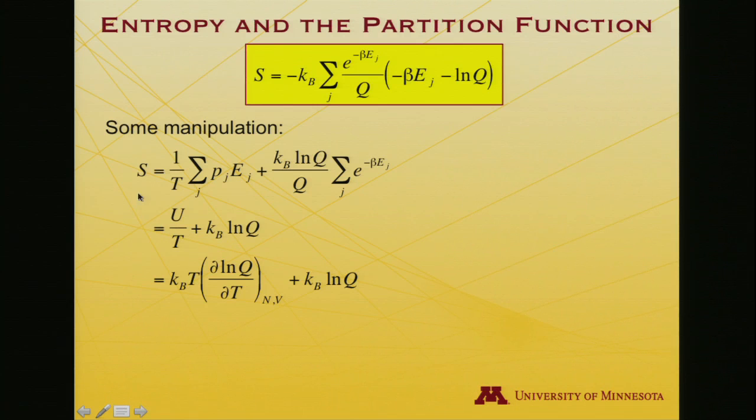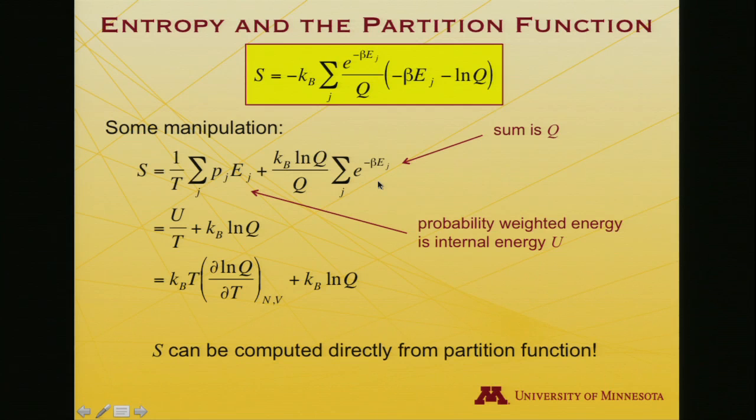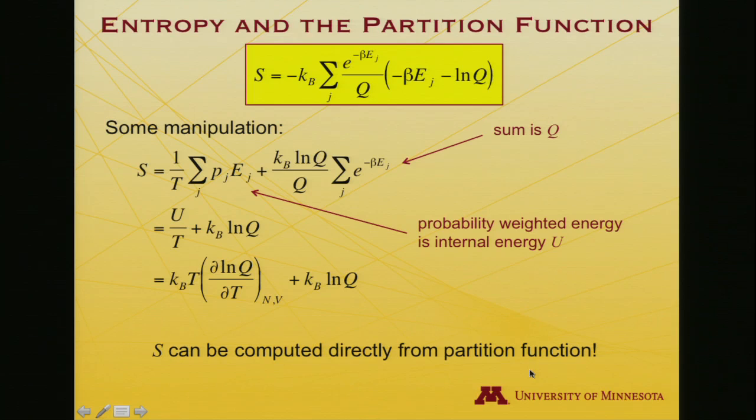And let me write that in a slightly more traditional form, which recognizes that u depends on the partition function that we've already derived. So we get s is equal to kT partial log q partial T plus k log q. So probability-weighted energy is the internal energy, that was a key step we used. This sum is equal to the partition function, a key step we used. And the take-home message, which is particularly important, is that entropy can be computed directly from the partition function, just as we've been successful with internal energy, with pressure, with heat capacity.